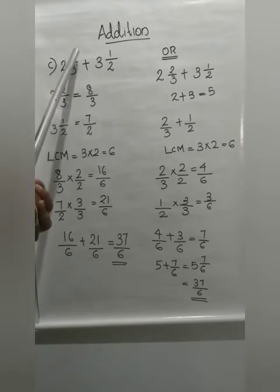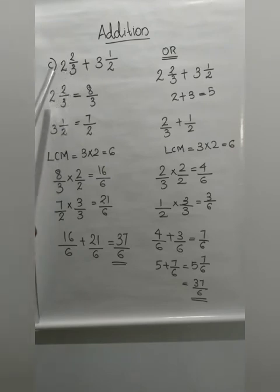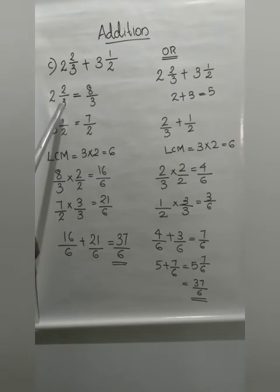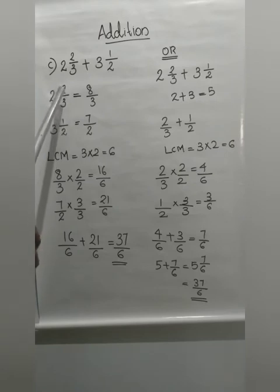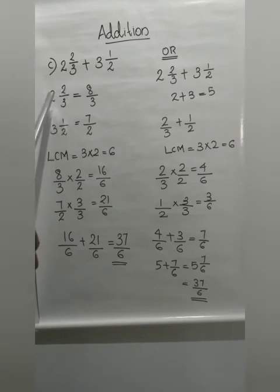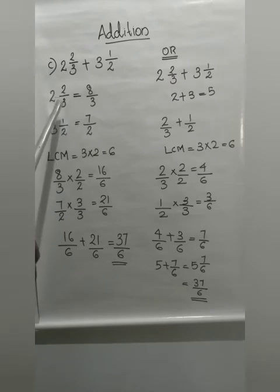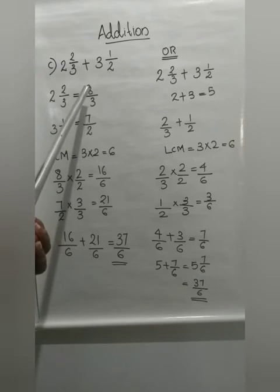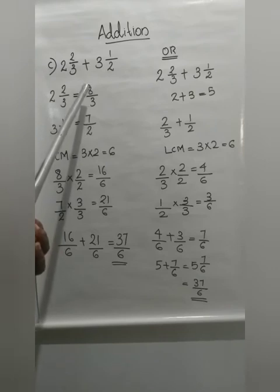The first one is 2 and 2 by 3. How will you convert? Multiply the whole number part with the denominator, then add the numerator to the product. So 2 into 3 = 6, and 6 plus 2 = 8. So the improper fraction is 8 by 3.